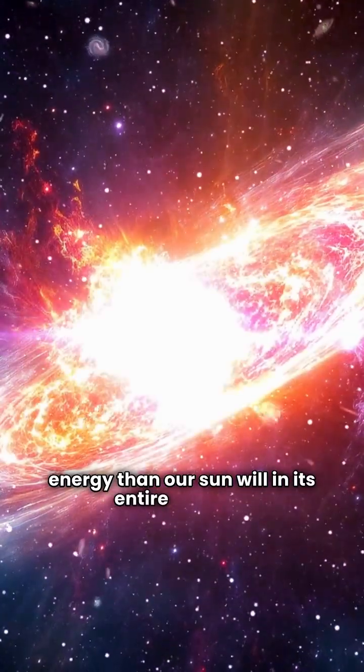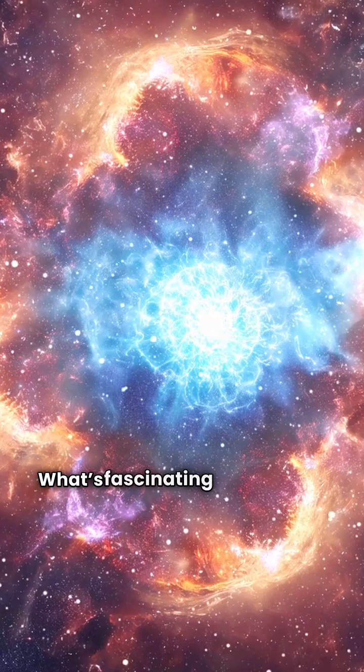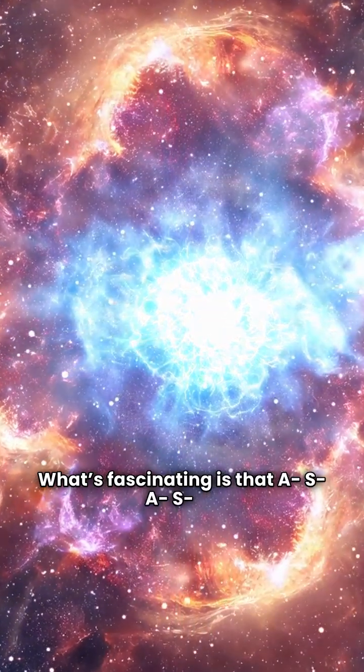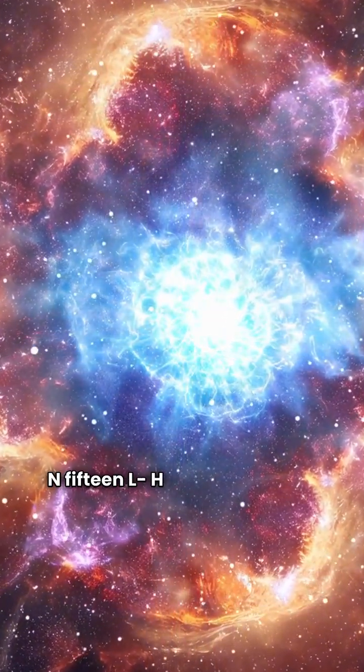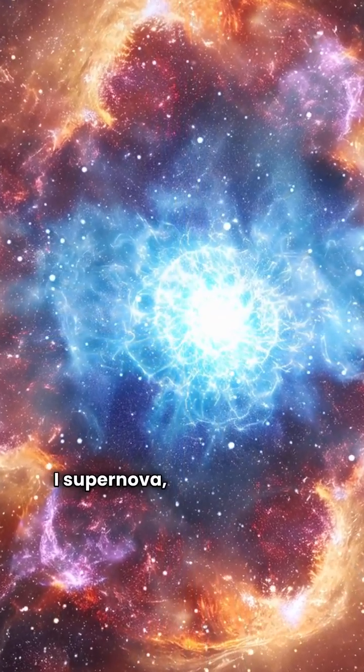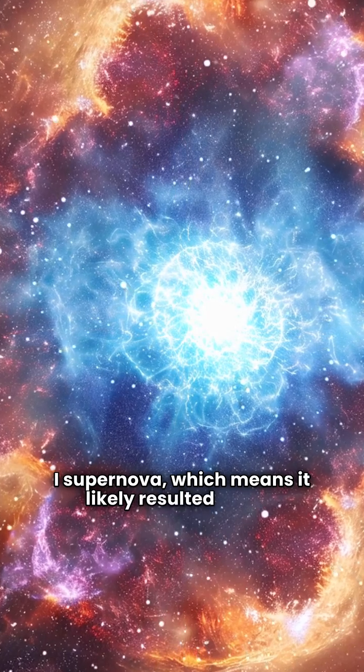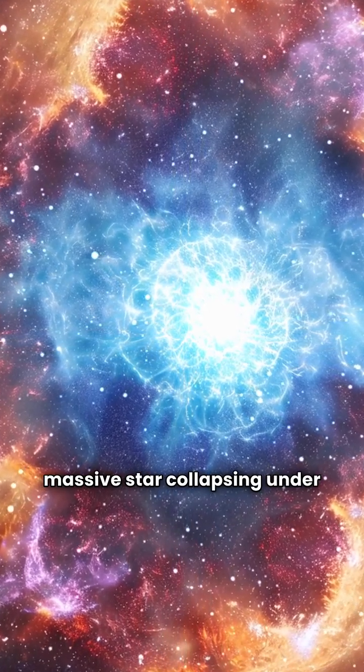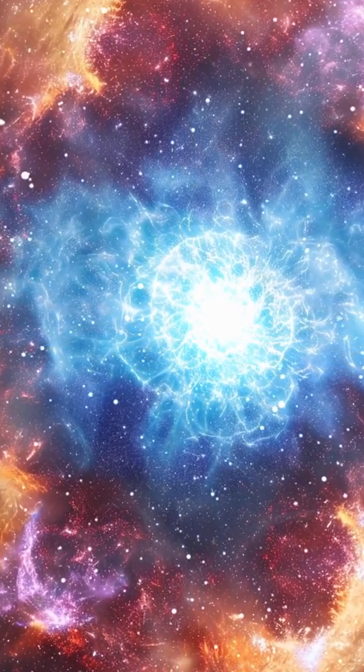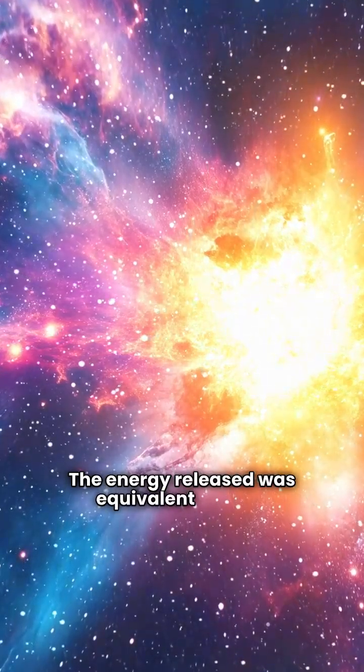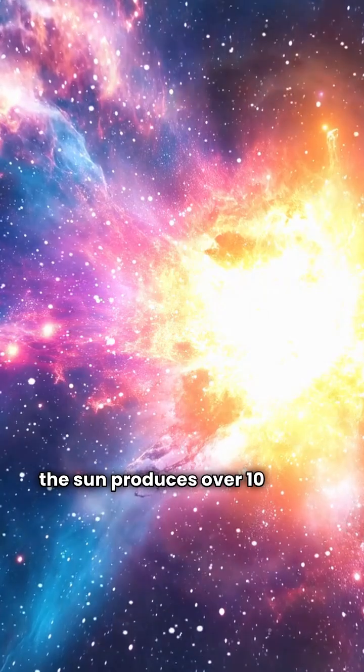Imagine a star going out with a bang, releasing more energy than our sun will in its entire lifetime. What's fascinating is that ASASN 15LH is classified as a type 1 supernova, which means it likely resulted from a massive star collapsing under its own gravity. The energy released was equivalent to what the sun produces over 10 billion years.